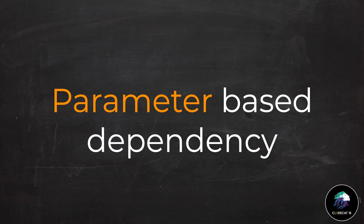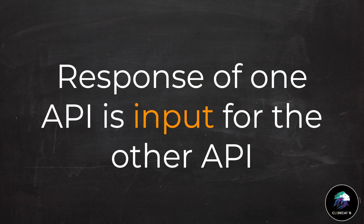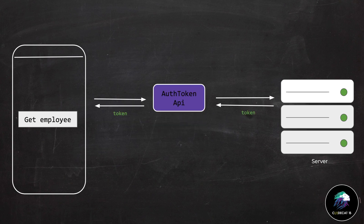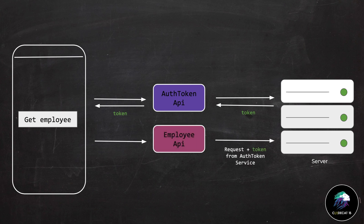Now, let's talk about parameter-based dependency. Parameter-based dependency is when the response of one API is the input for another API. The most common example is token-based API implementation. In this case, I will call the employee API, but before that I will call an auth token API to get the token from the server, and then pass that as a parameter in the employee API.